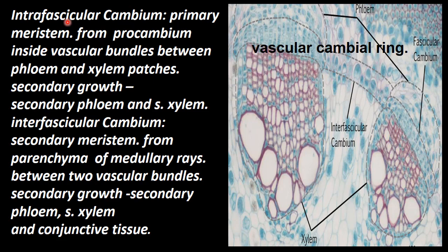The intrafascicular cambium is located within the vascular bundle — this is the phloem, and this is the xylem. In the vascular bundle, we have xylem and phloem. This develops from procambium and is found inside the vascular bundles between the phloem and xylem patches. This is the primary xylem and phloem.